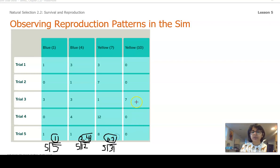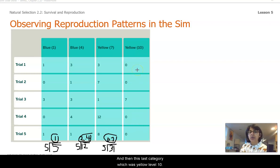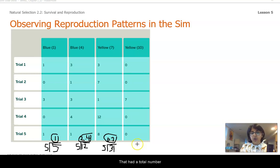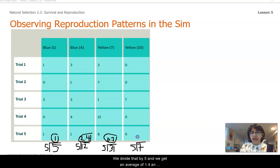This last category, which was yellow level 10, had a total number of seven times that those Australopes reproduced. We divide that by five, and we get an average of 1.4.